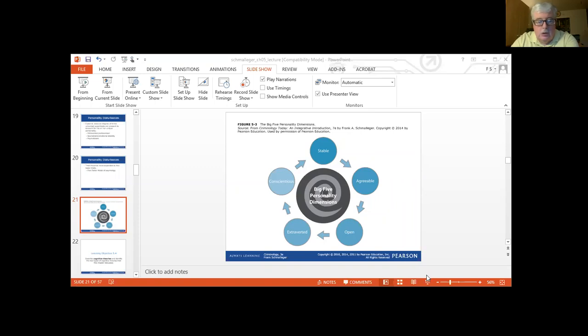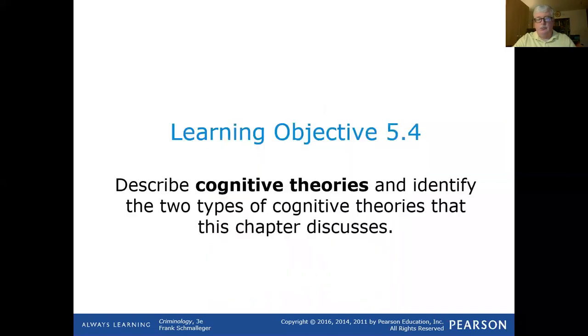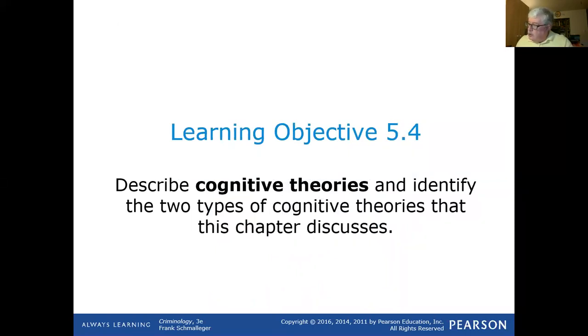Moving on to our PowerPoint. Cognitive theories are basically theories surrounding what's going on in the brain. We're looking at learning theories that examine thought processes, explain how people learn to solve problems including those involving questions of value and morality, and how people perceive and interpret the social environment. There are branches including moral and intellectual development and information processing. You should really be reading this material and highlighting in the chapter, because to explain it in fine detail would take 24 hours.